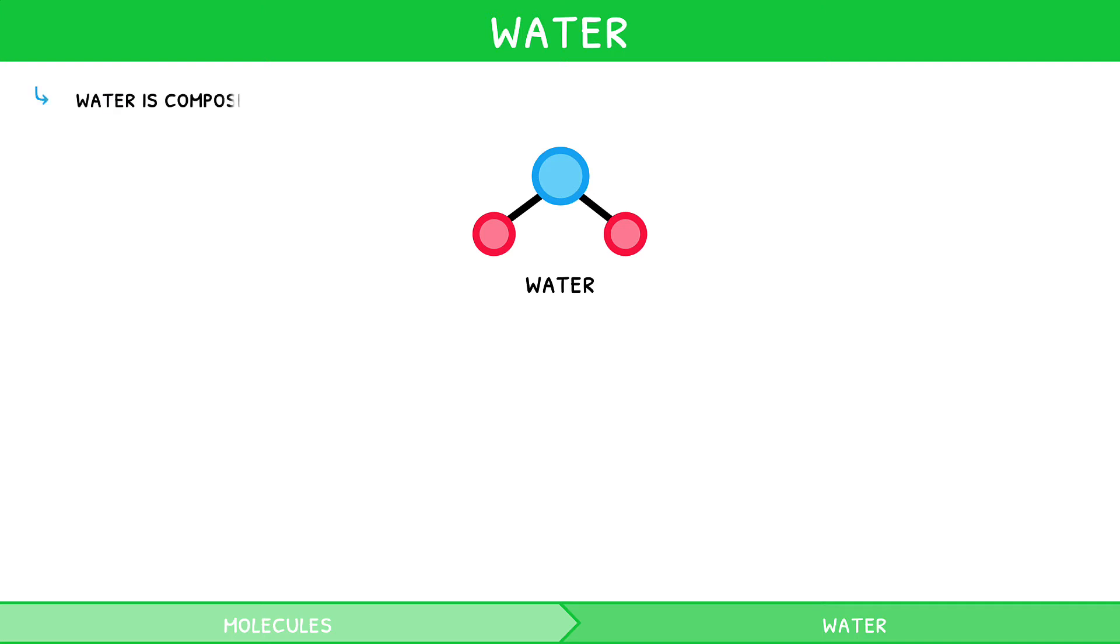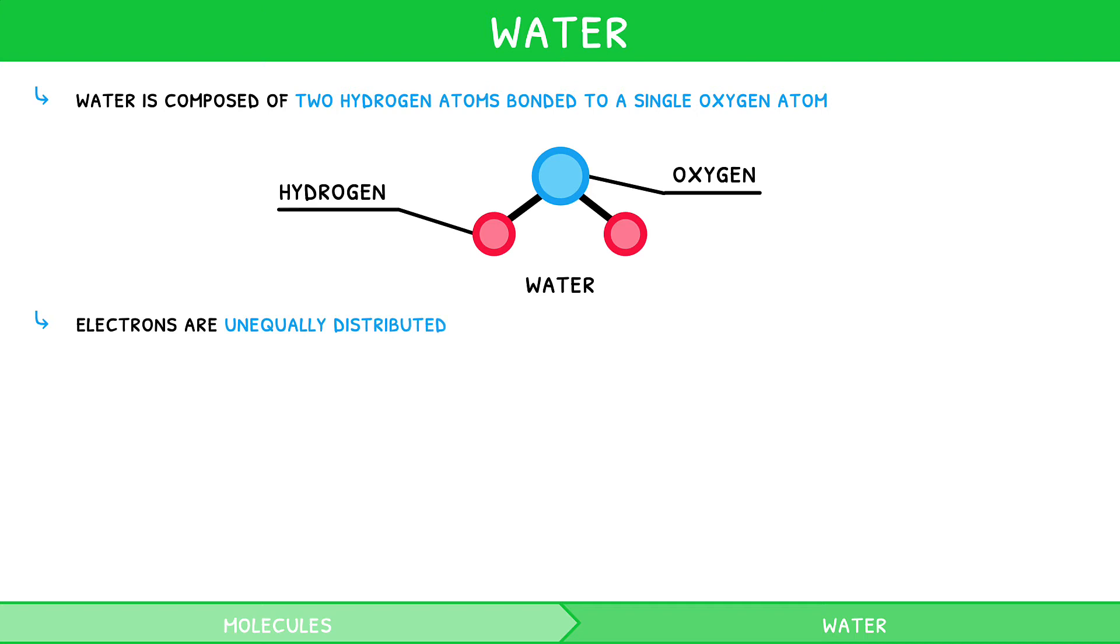Water is composed of two hydrogen atoms bonded to a single oxygen atom. The electrons within these covalent bonds are unequally distributed, causing the oxygen atom to be slightly more negatively charged compared to the hydrogen atoms. This means that water has a negative and positive pole, which means it is termed a polar molecule.